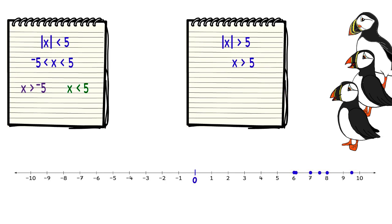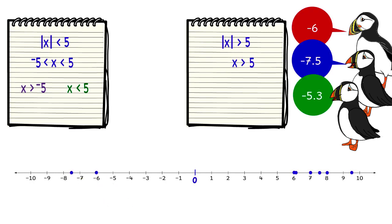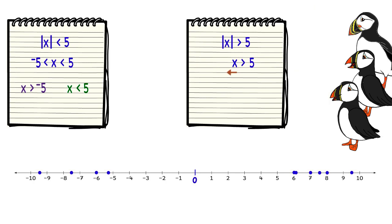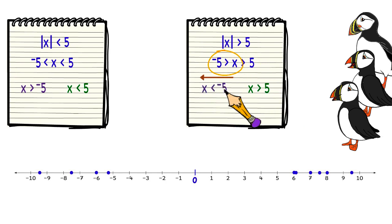But those are not the only answers, because negative 6, negative 7.5, negative 5.3, and negative 9 and a half are also numbers that are greater than 5 away from 0. A simple way to describe all those numbers is x is less than negative 5. So to rewrite the absolute value of x is greater than 5 without the absolute value bars, we write: x is greater than 5 and x is less than negative 5.